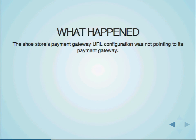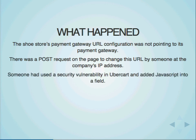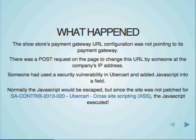Upon investigating, Myrtle noticed that the payment URL — where people get redirected to when they enter their credit card information — had been changed. It wasn't pointing to the right payment URL; it was pointing to somebody else's payment URL. There was a POST request on the page used to change this URL by someone at the company. Well, Myrtle is the only person at the company. She's the one shipping all the boxes. So it had to have been her — but she didn't change the URL.